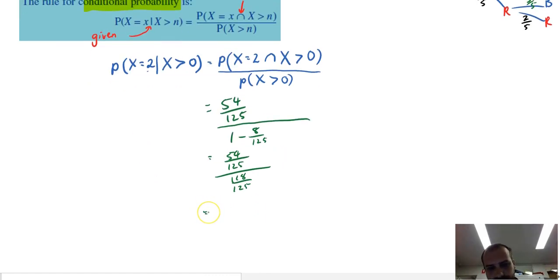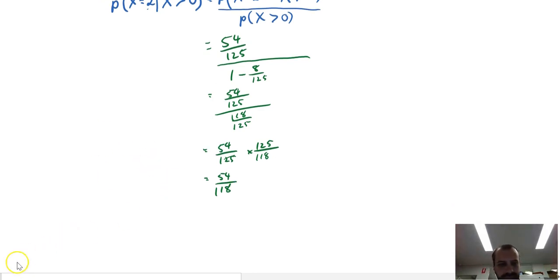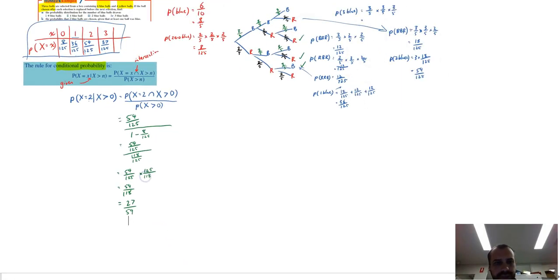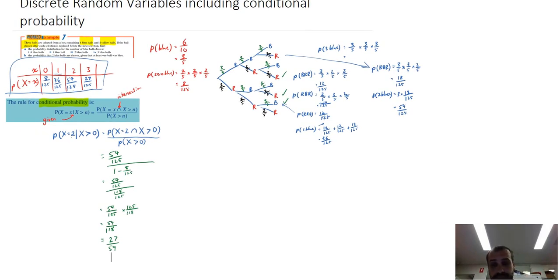That's the same as fifty-four over one hundred and twenty-five times one hundred and twenty-five over one hundred and eighteen. The one-twenty-fives cancel, leaving fifty-four over one hundred and eighteen, which simplifies to twenty-seven over fifty-nine. There we have it — we created a distribution and then used conditional probability to find the probability of something given something else.